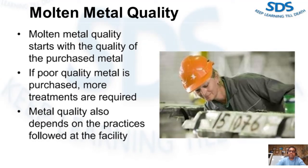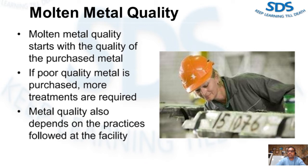Only charge scrap of known origin, such as trim scrap from the same alloy, to avoid contamination. Avoid mixing different scrap materials. All scrap material, including returns from the die casting operation, process and oxide skin, often have die casting lubricant or other metal working residues. Oxides and hydrogen are an additional source of metal contamination, as are possibly unwanted trace elements.